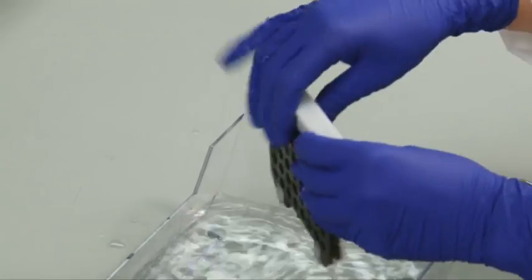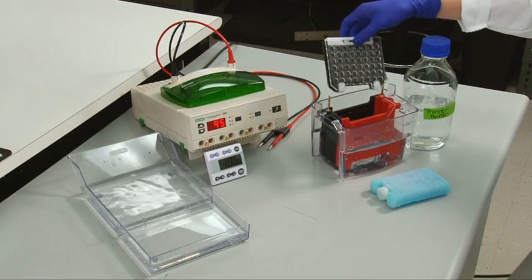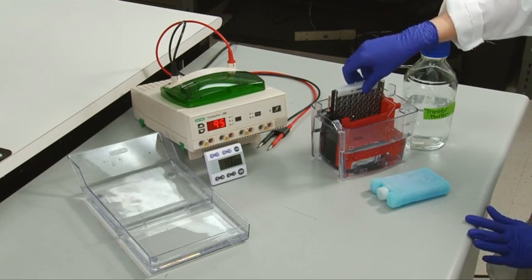Lock the cassette and place it in the transfer apparatus containing cold transfer buffer, ensuring that the cassette is properly positioned from negative to positive.